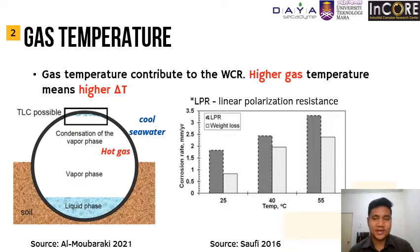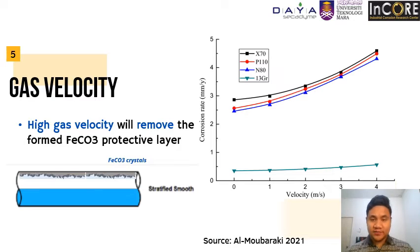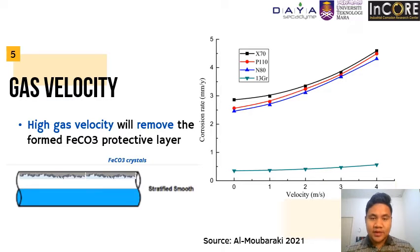For gas temperature, higher gas temperature translates to a higher temperature difference, which leads to more water vapour condensing. As seen from the bar chart, both experimental approaches visualise a linear increase of corrosion rate as gas temperature increases. For the fourth factor, carbon dioxide dissolves in the condensed water and corrodes the metal surface, where ferrous carbonate (FeCO₃) is the corrosion product. FeCO₃ is basically a protective layer that prevents further corrosion. However, with the influence of gas velocity, the FeCO₃ crystal protective layer is removed from the metal surface, leaving it vulnerable to further corrosion. As seen from the chart on the right, higher gas velocity causes corrosion rate to increase at an increasing rate for all types of steel.